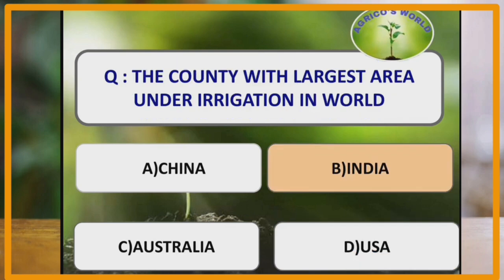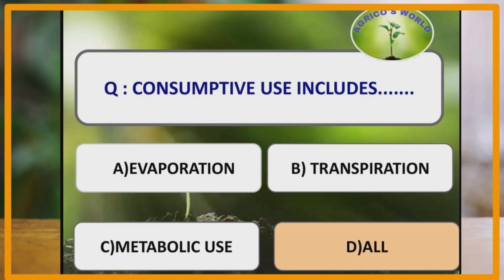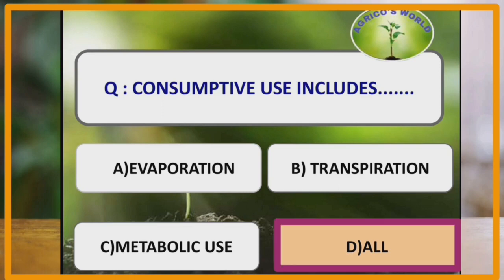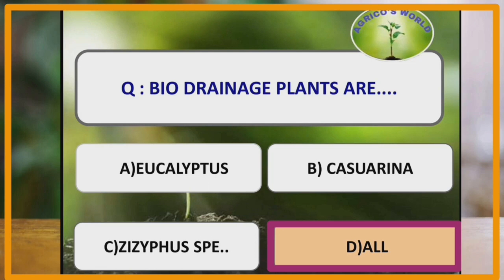The country with the largest area under irrigation in the world is India, followed by China and USA. Consumptive use includes evaporation, transpiration and metabolic use. Bio-drainage plants are Eucalyptus, Casuarina and Ziziphus. All three are bio-drainage plants.